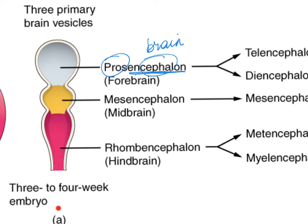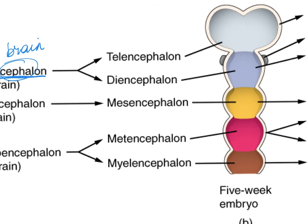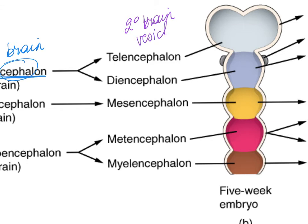Notice our timestamp: we're only at week three or four when we have formed our three primary brain vesicles. These three primary brain vesicles are going to continue to differentiate to form the secondary brain vesicles in the fifth week of gestation. I don't need you to memorize these five secondary brain vesicles, but I do need you to see some major changes. Now we're starting to see what look like Mickey Mouse ears — those are going to form your two big halves of your brain.